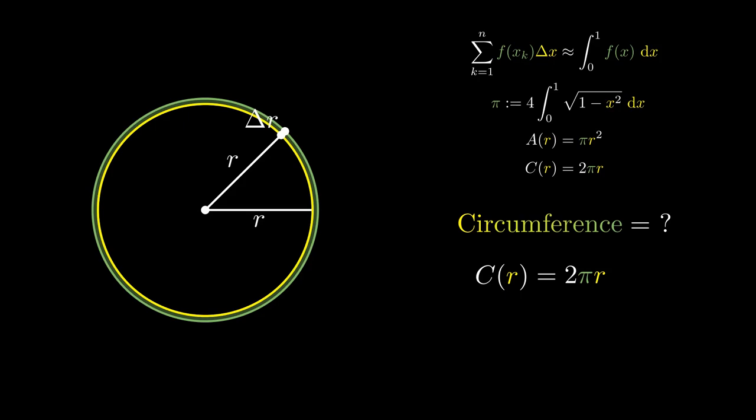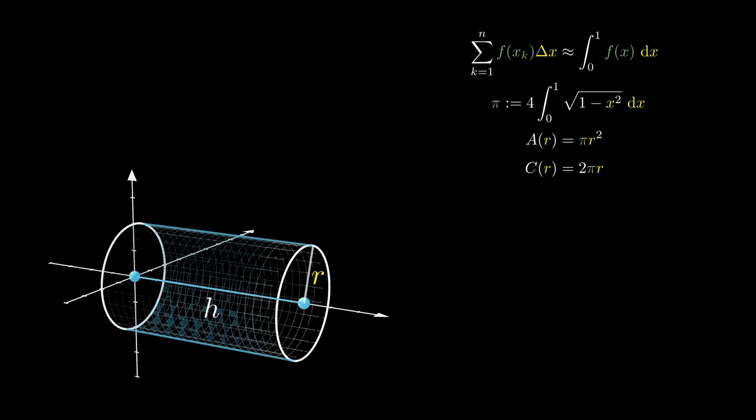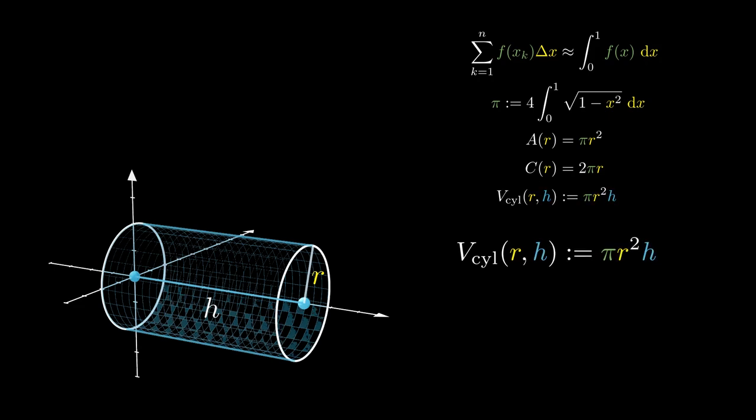But what if we took the circle and put it on its side and drag it across the x-axis? How much space does that object actually contain? We can think of it as the base of the circle multiplied by the height of the cylinder. In fact, that is precisely what we mean by the volume of the cylinder πr²h.